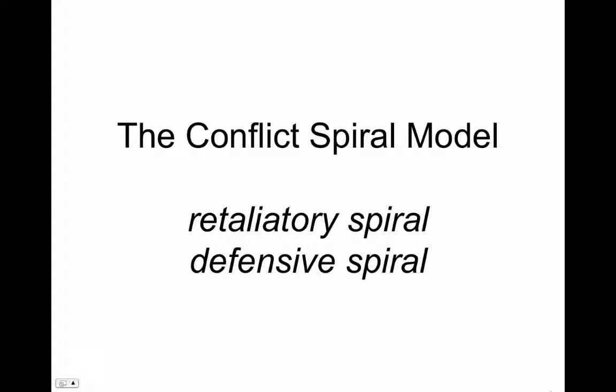In a retaliatory spiral, each party punishes the other. In defensive spiral, each party reacts so as to protect itself from a threat it finds in the other. There is a difference in motivation. One is proactive spiral and the other reactive.